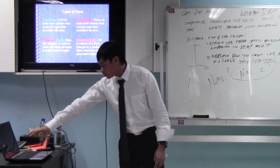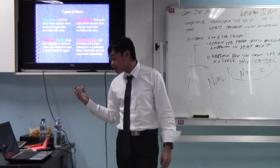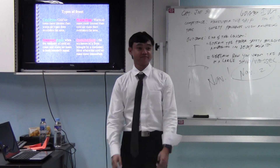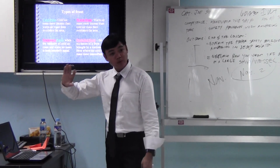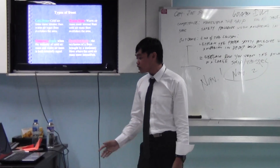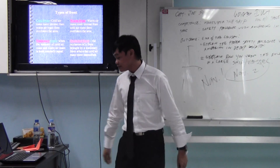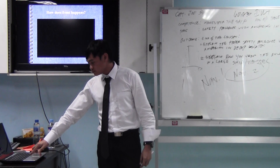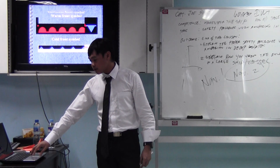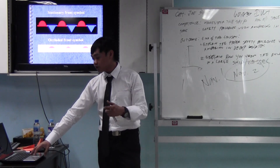Stationary front: when the intensity of the cold air mass and warm air mass is both equal, there is no movement. The last one is the occluded front — from the word occlusion. The occluded front is the occlusion of a front brought by a stationary front where the cold air mass becomes more intensified. These are the symbols: for warm front, for cold front, for stationary front, and for occluded front.